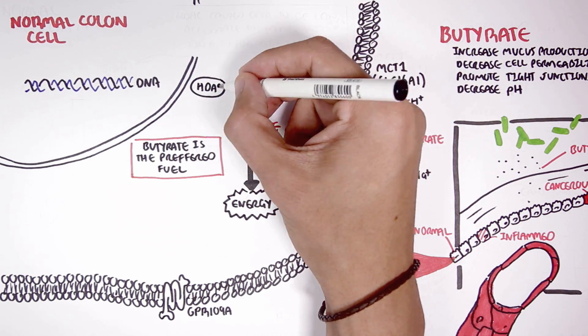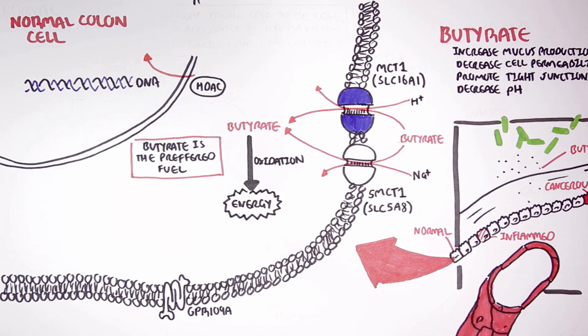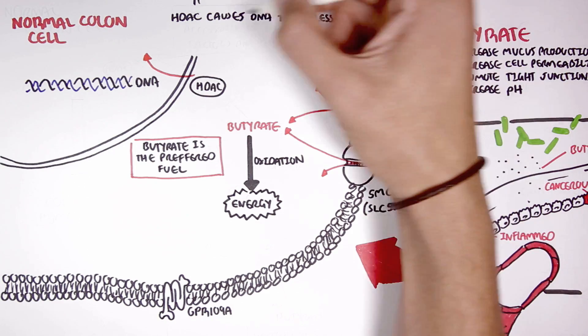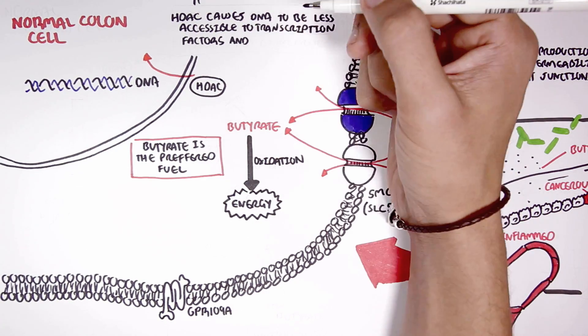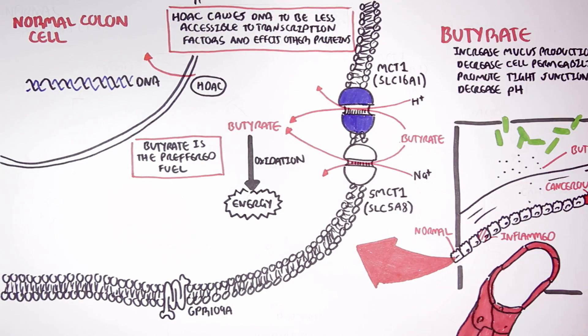Within cells there is an enzyme called histone deacetylase, or HDAC. What HDAC does is that it causes DNA to be less accessible to transcription factors and also affects other proteins by removing acetyl groups from them. And therefore, you can think of HDAC as an enzyme that suppresses genes and proteins.